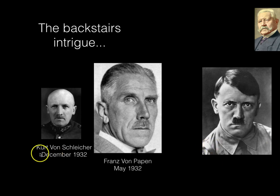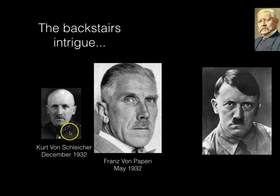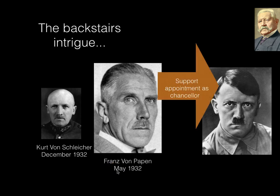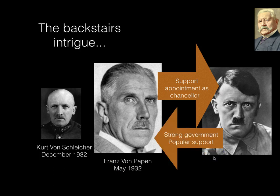Schleicher is appointed chancellor in December 1932. His plan fails. Papen is highly resentful towards Schleicher, as he feels Schleicher manoeuvred him out of the top political office. He wants to get back into power. What he's hoping is that if he supports Hitler's appointment as chancellor and himself as vice-chancellor, then there will be a strong government with popular support. Because there's real fear that due to this unstable government, these Article 48 chancellors, there could be some sort of popular revolution. If Papen can get support from the Nazis, at least they've got a government with some degree of popular support.